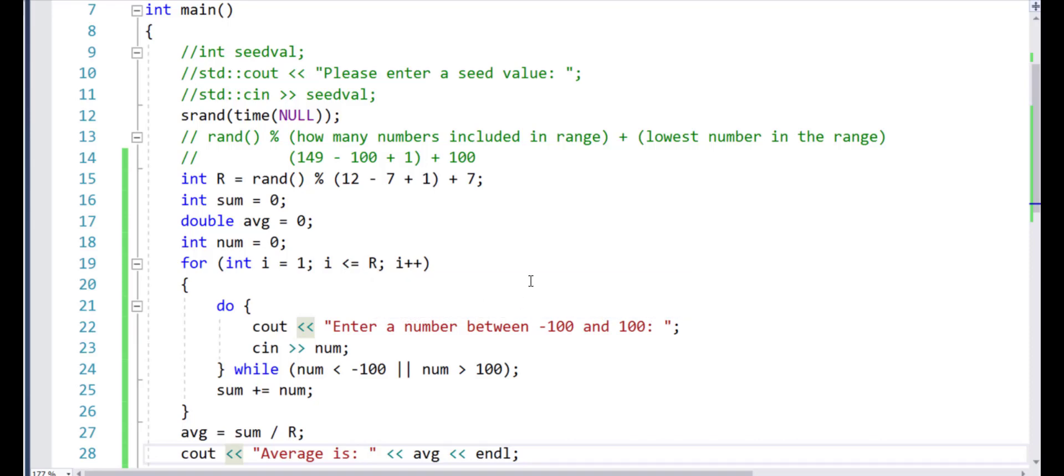Now, what am I supposed to do every time the loop runs? I'm supposed to enter a number from user within the range of negative 100 to positive 100. And also, if the user does not supply the correct answer, I need to ask the user again. That's why I have this input in a do-while loop. So it's a nested loop.